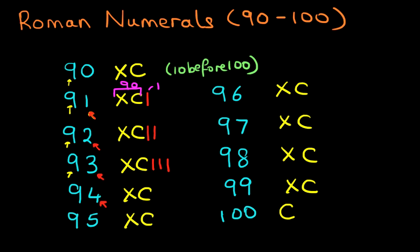94. Well, how do we write four? We write down one before five. So it becomes XCIV. 94 is XCIV.